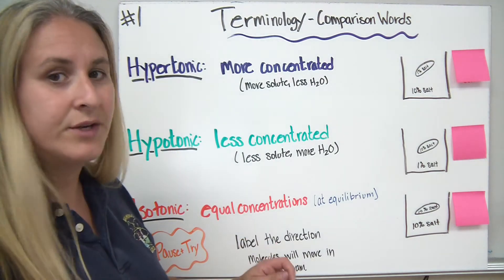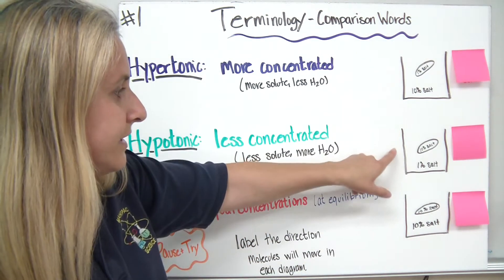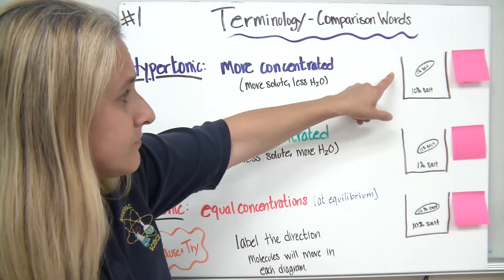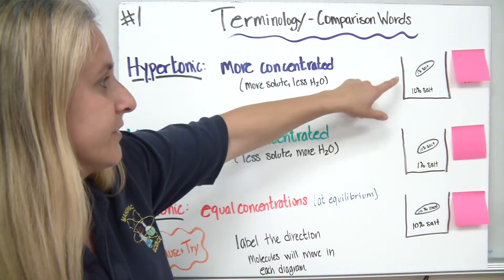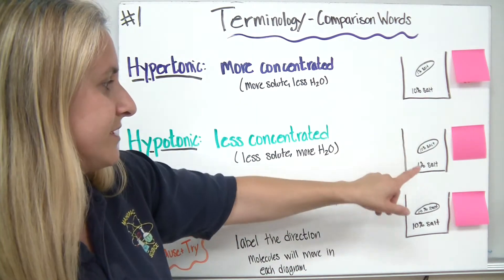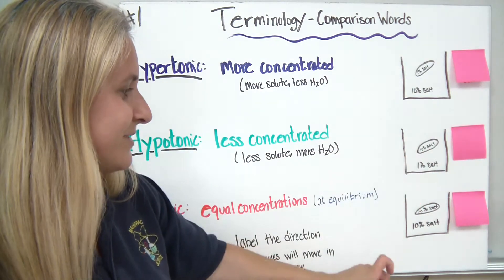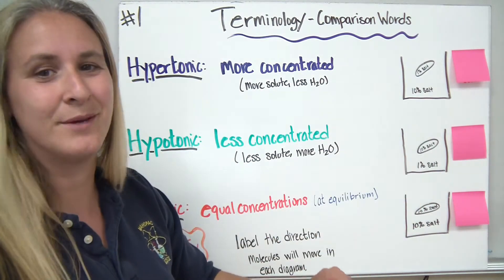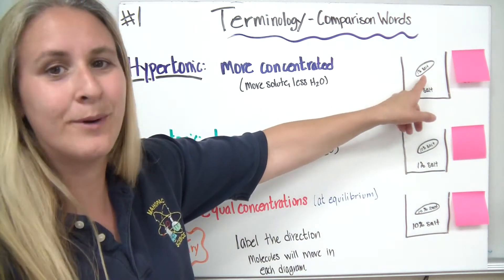So what I'd like you to do is pause and try, and I would like you to determine, given the following diagrams, 1% salt and then 10% salt, 10% salt, 1% salt, and then 1% and 10% again. The circle represents a cell.